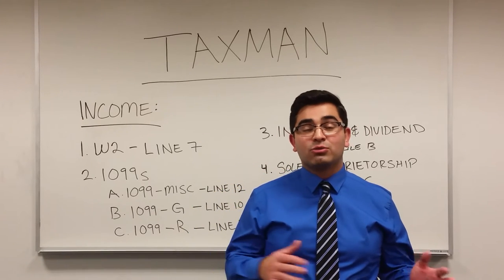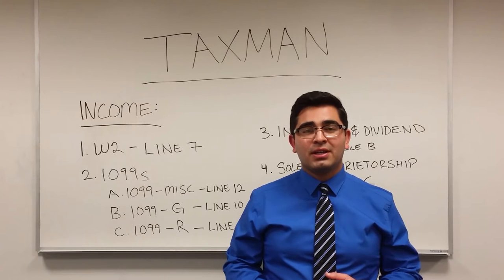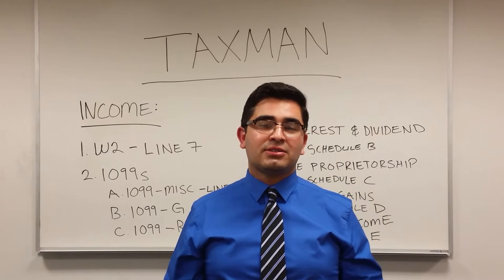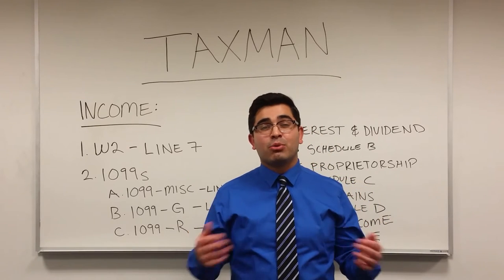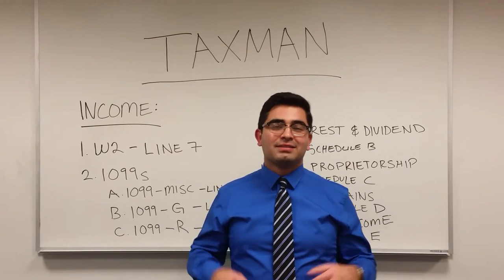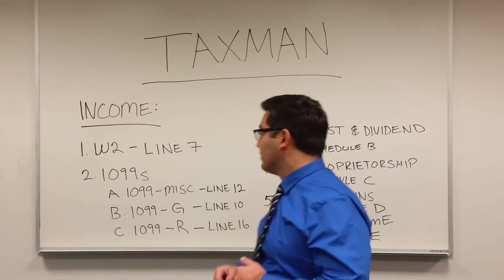We've already covered lines 1 through 6 in our prior videos. Lines 1 through 5 are the filing statuses that you can select from when completing your return. Line 6 is the exemption portion of your return, and line 7 is where income begins.